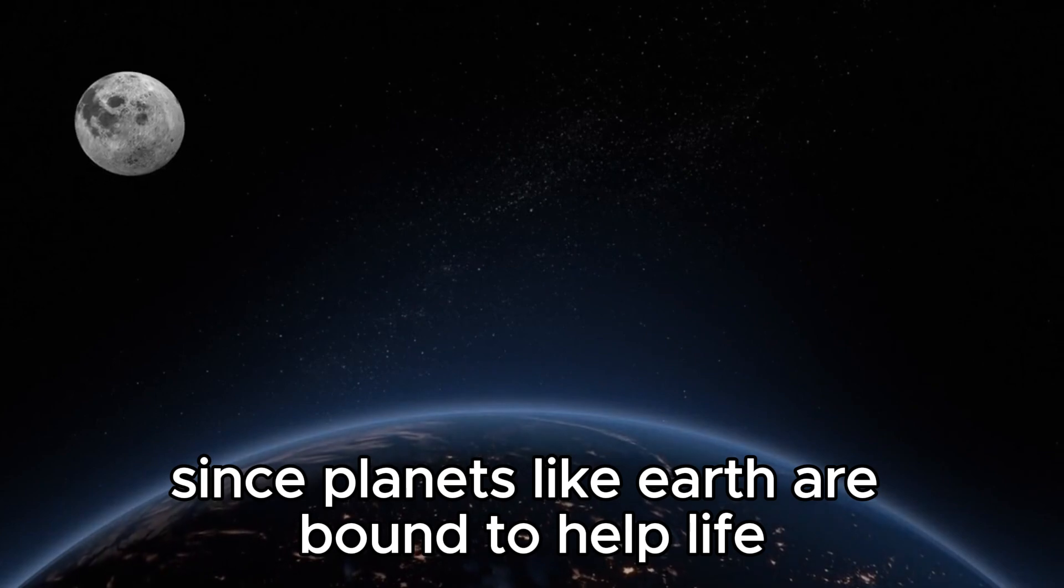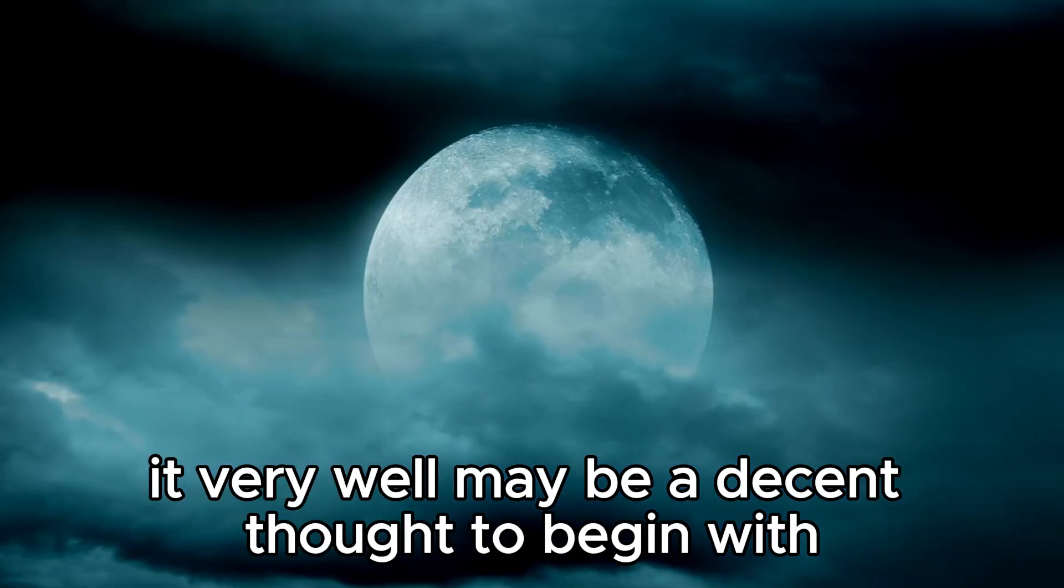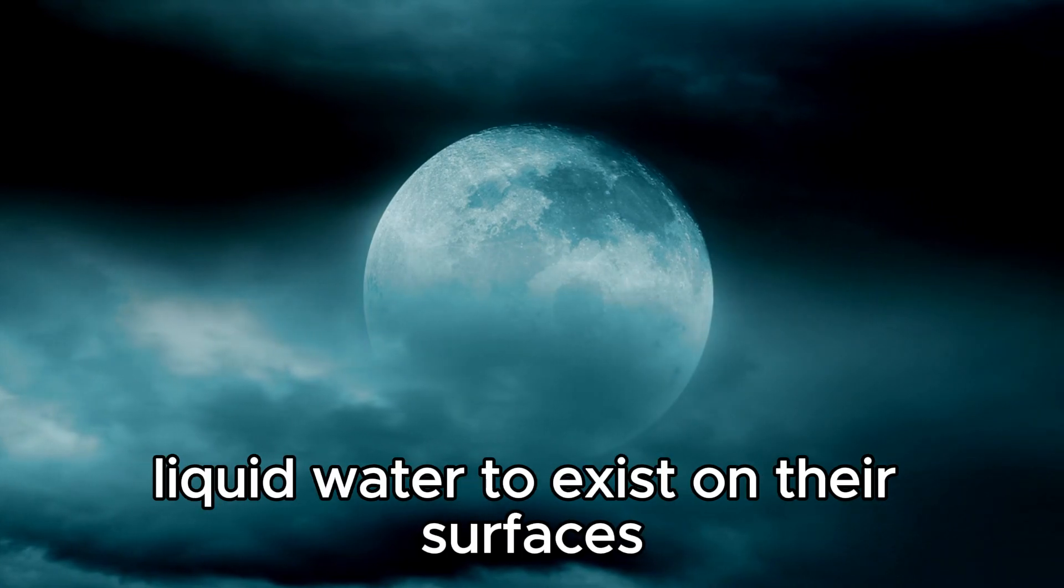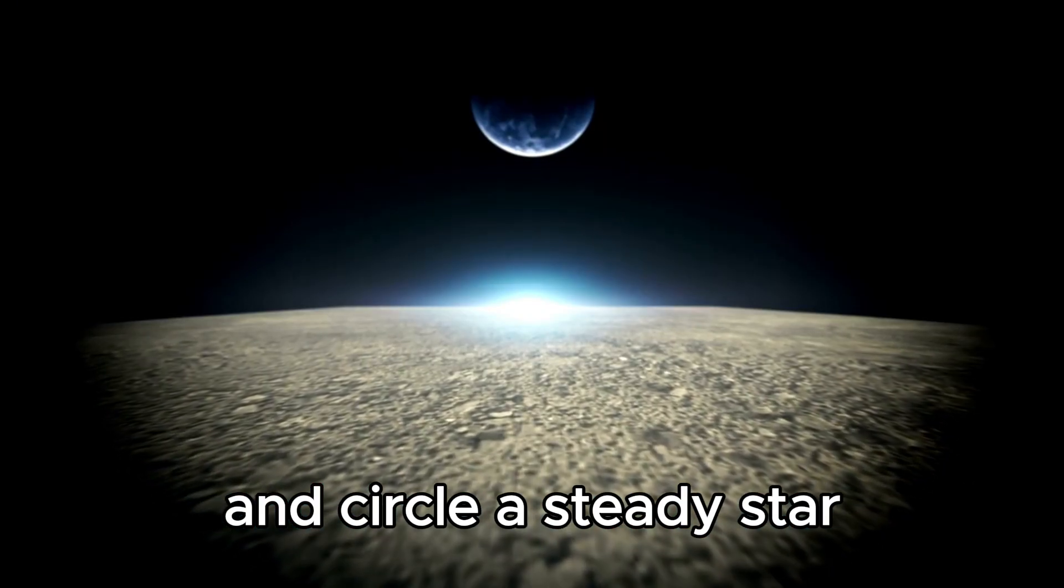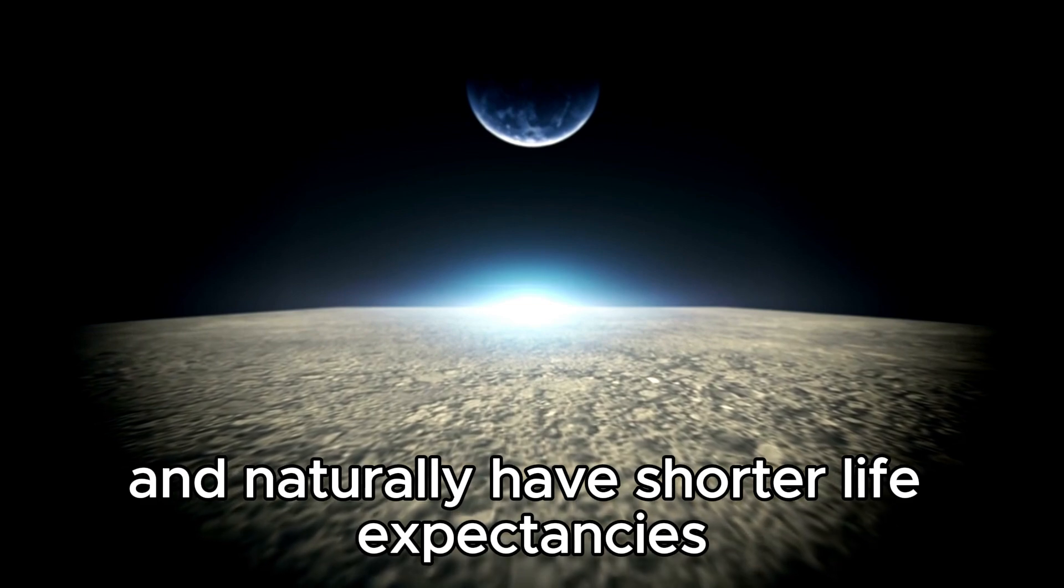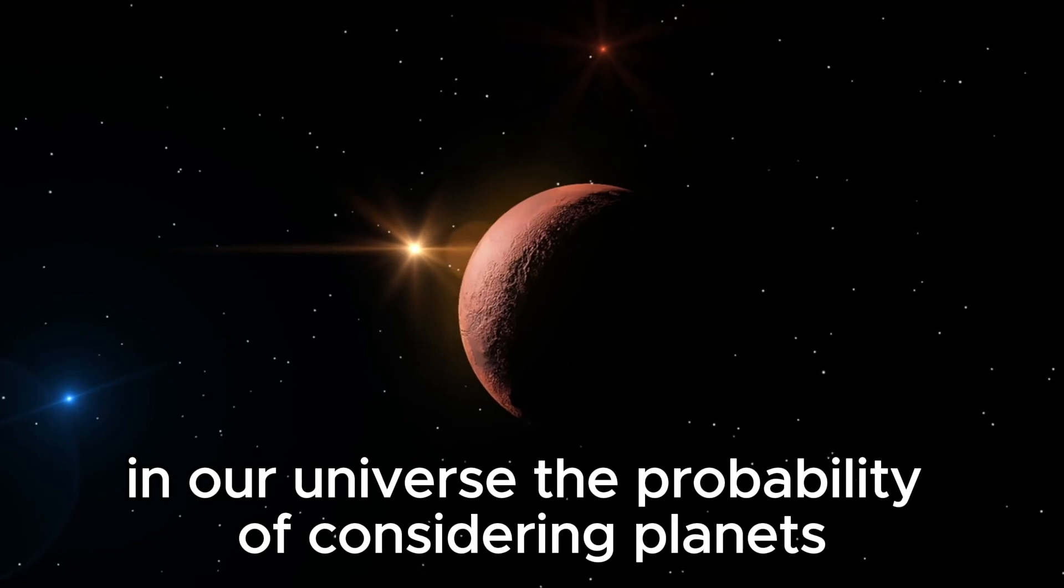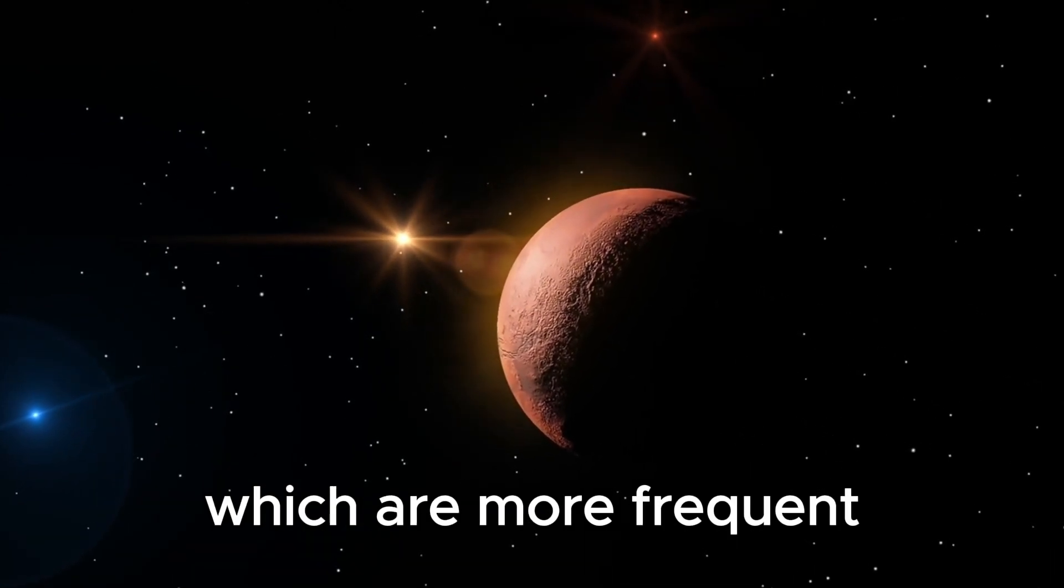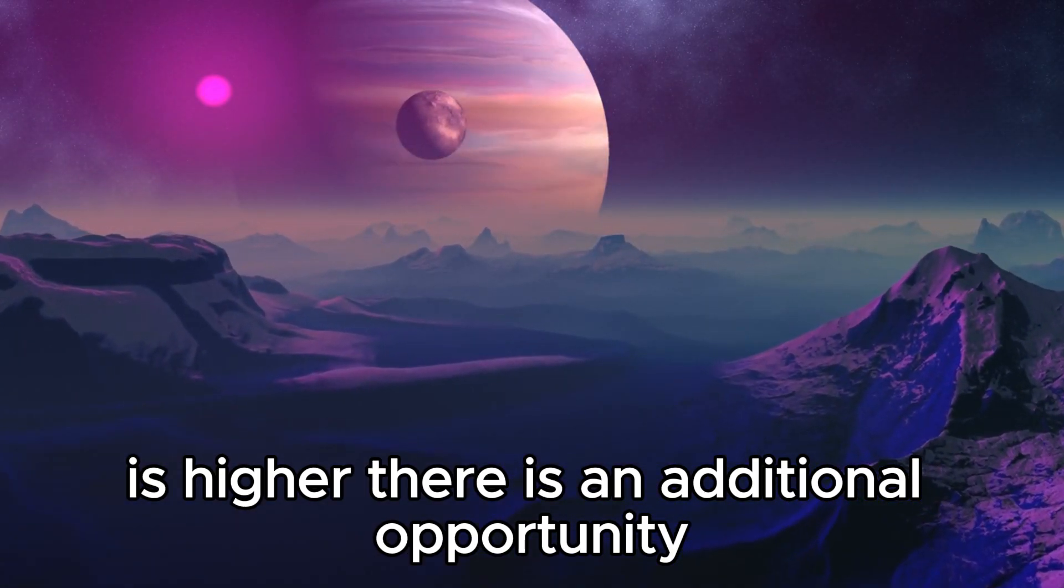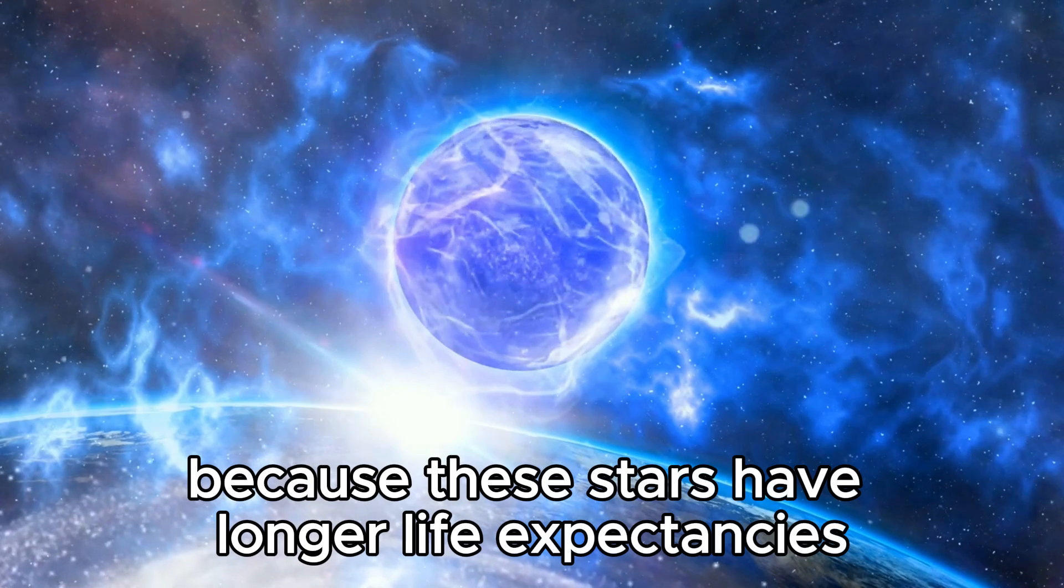Since planets like Earth are bound to support life better than planets with extreme temperatures or harsh conditions, it could be a good idea to start with those first. Prime candidates could have temperatures that allow liquid water to exist on their surfaces and orbit a stable star. Our Sun is a yellow G-type star. These stars are more uncommon and naturally have shorter lifespans in our universe. The probability of considering planets circling red dwarf stars, which are more frequent and have lower luminance and temperatures than the Sun, is higher.